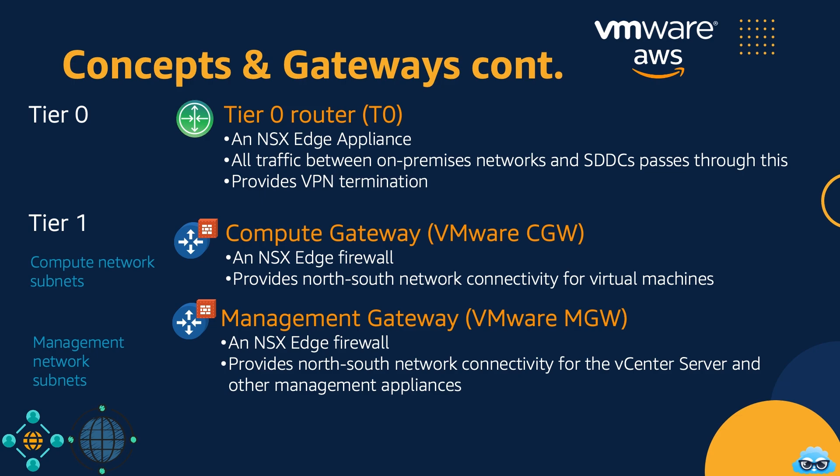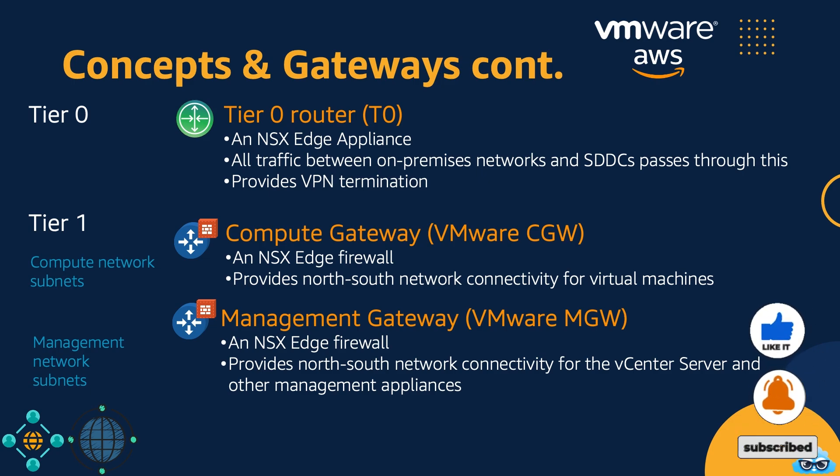Within our network structure, a series of Tier 1 routers serve distinct roles. The Management Gateway — a Tier 1 router powered by an NSX Edge firewall — handles north-south network connectivity specifically for management VLANs, facilitating secure communication for management appliances like vCenter Server and NSX Manager. Compute Gateways are Tier 1 routers also equipped with NSX Edge firewalls, playing a vital role in providing north-south network connectivity for data subnets and VLANs, ensuring efficient data flow for compute workloads. These specialized gateways enhance security and control for both management and data traffic.